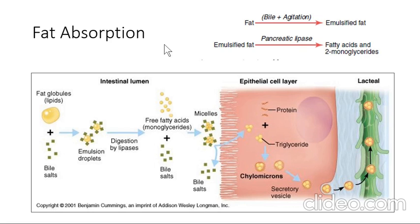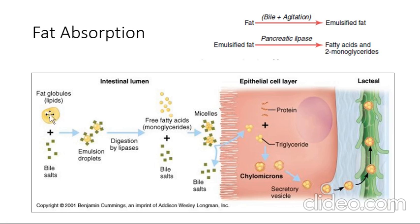The most important component in fat digestion is bile. A fat globule entering the duodenum is surrounded by bile salts, which split it into many fine droplets — this is emulsification. This increases the surface area so that lipase enzymes from the pancreas, stomach, and lingual sources can act on the smaller droplets and break down the fat more easily.